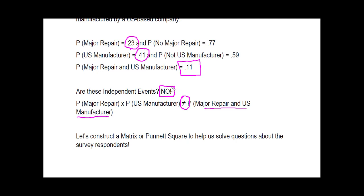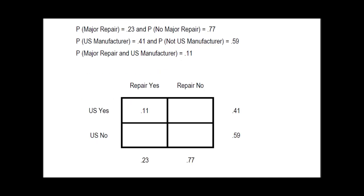For dependent events, the easiest way to solve these is with a matrix or a Punnett square. So let's get started. I'm going to use these probabilities that we pulled out from the question and I'm going to use it to label my box.